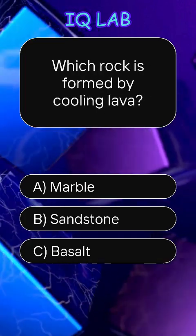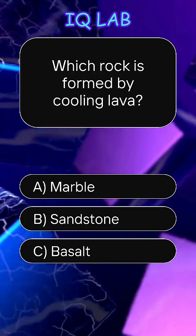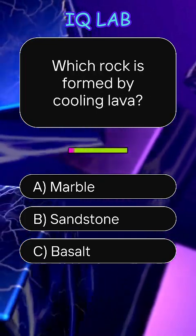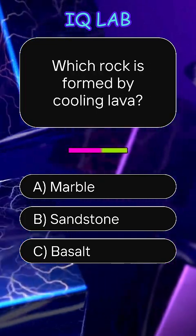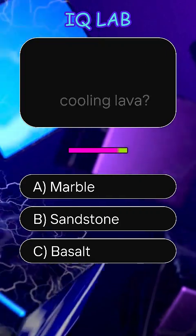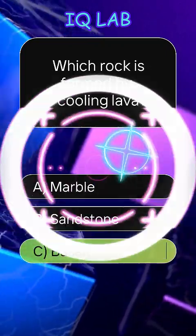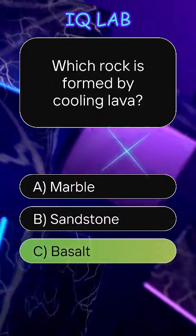Which rock is formed by cooling lava? Answer C, basalt.